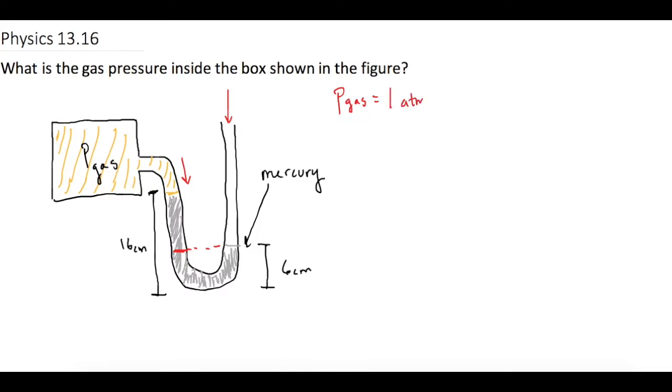Which we'll say is 1 atm, plus the pressure that the gas is pushing on the liquid from the other side, which is going to equal the weight displaced, which is rho times gravity times the height of the liquid.